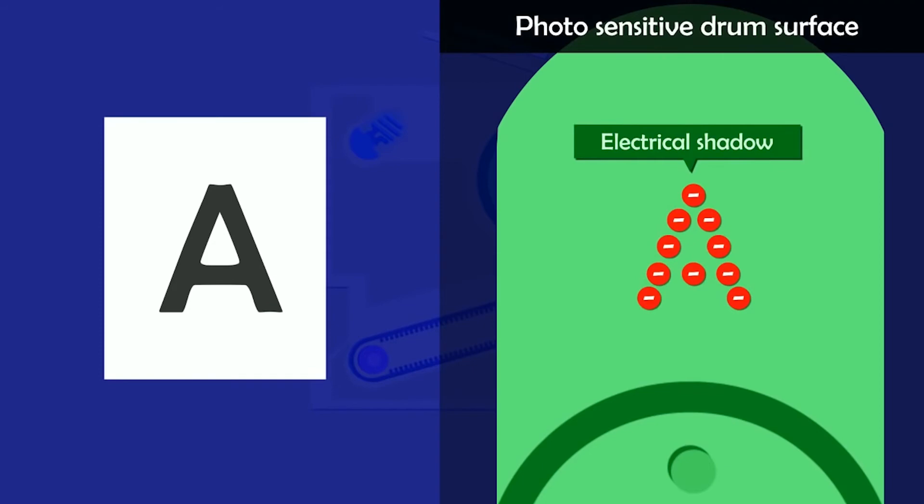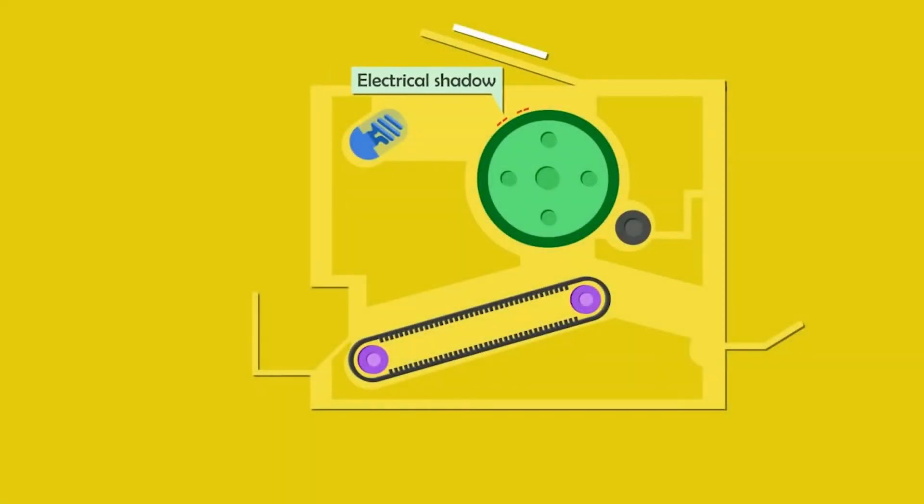This creates an electrical shadow of the page on the photosensitive drum.